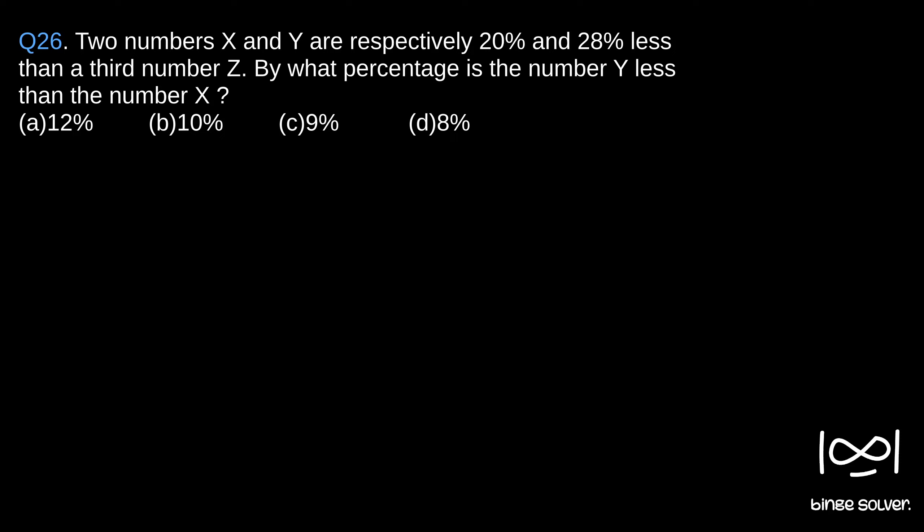Since the first statement talks about X and Y as some percentage connected to Z, we will first assume Z is 100. It is said that two numbers X and Y are respectively 20% and 28% less than the number Z.